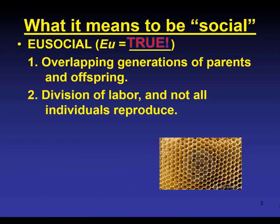The second requirement to being social is that there is a division of labor. Also, not all individuals in that colony reproduce. Back to division of labor — I do teaching, I don't fly airplanes, I don't do brain surgery, I don't do police work, I don't bake bread or fix potholes. I stick to teaching. Other people in our society fix roads, do medical work, police work, fly airplanes, make music or art. So there's a division of labor, and not all individuals reproduce within those colonies.